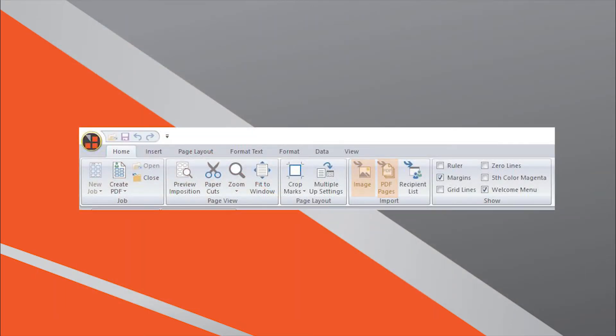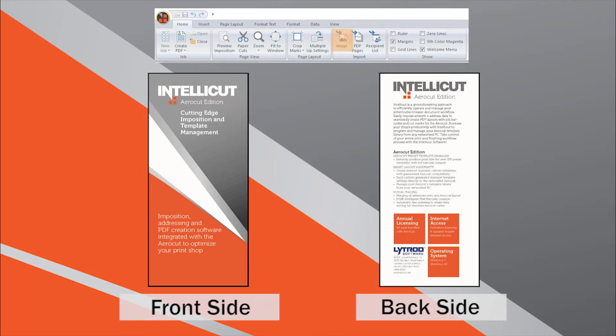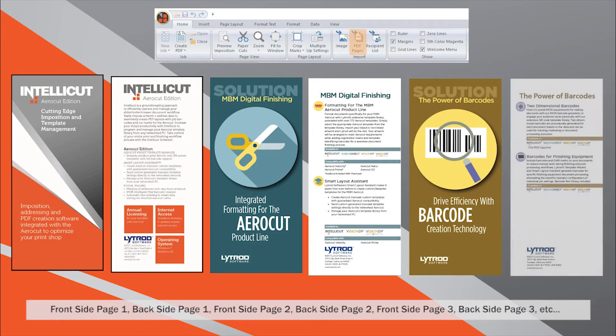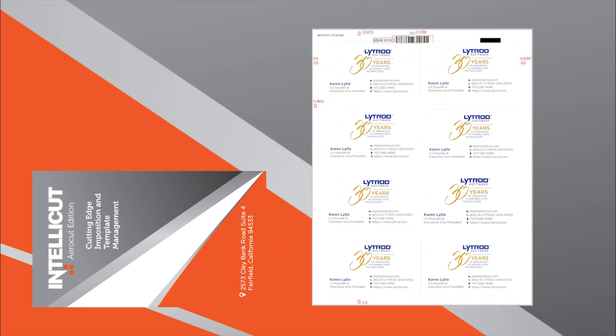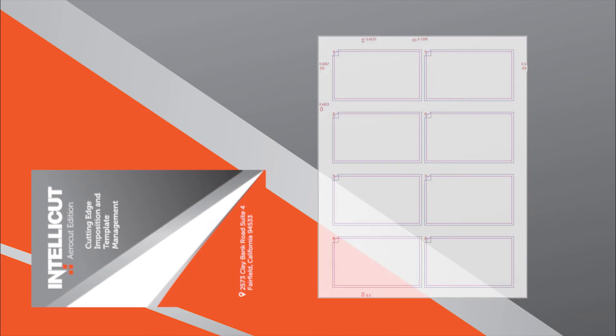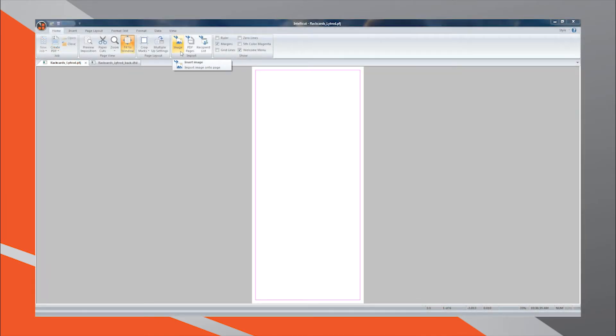IntelliCut supports two distinct methods of artwork imposition: importing 1UP artwork and importing multi-page artwork. Let's create layouts using both methods. Laying out 1UP artwork is the most popular method of imposition and refers to using a single design to populate the entire multi-up page. Here we see artwork for a single business card imposed 8 times on the front and 8 times on the back. To use this method of imposition, select the Import Image button from the Home tab.